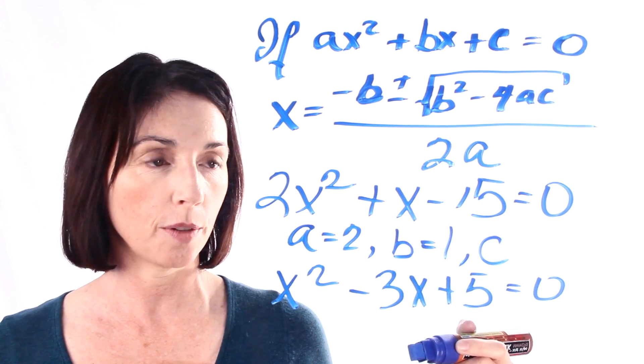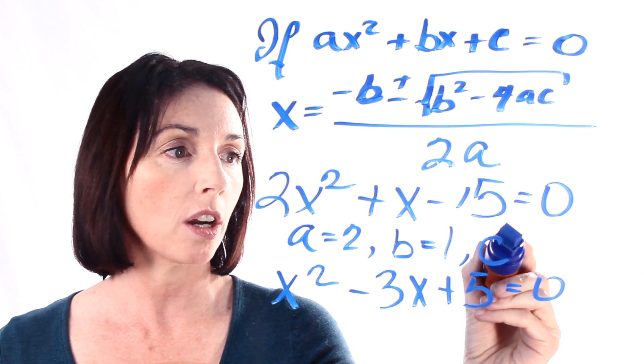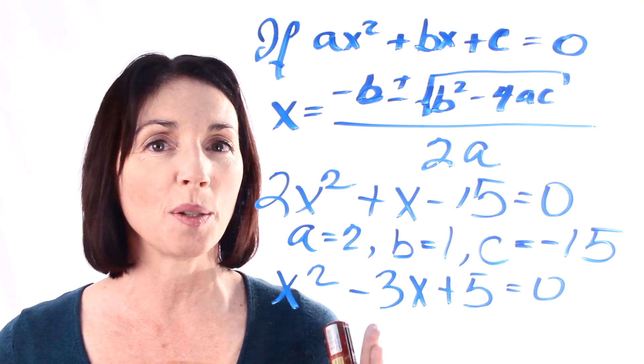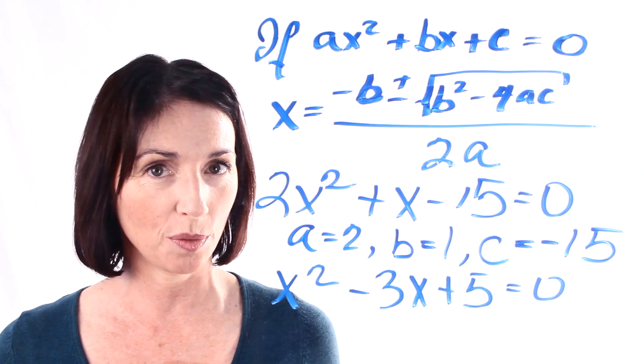c is the constant term. And in this case, we're subtracting 15. That means our constant term is negative 15. It's really, really important that you get the signs right. One wrong sign, and your whole solution will be off.